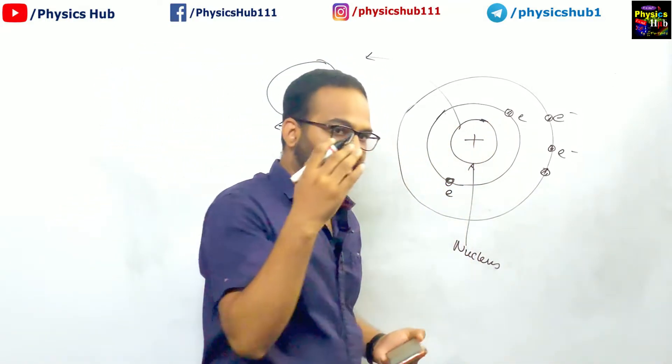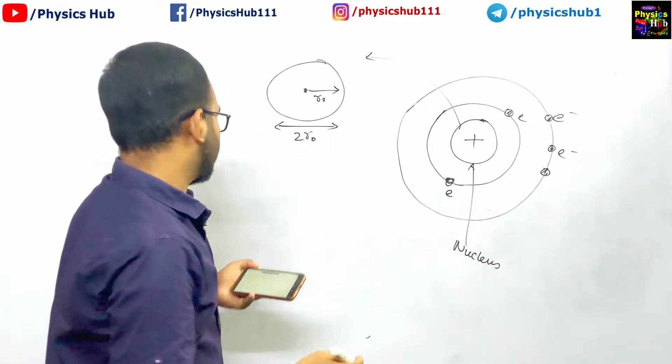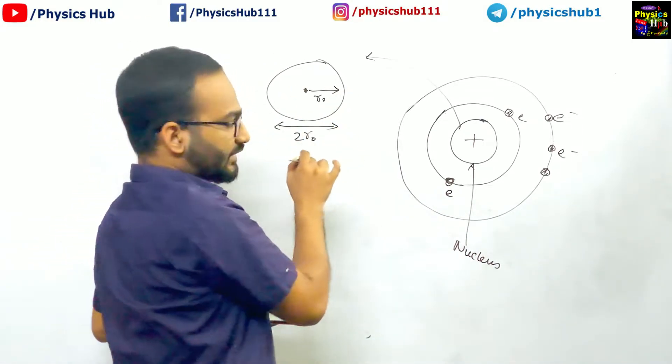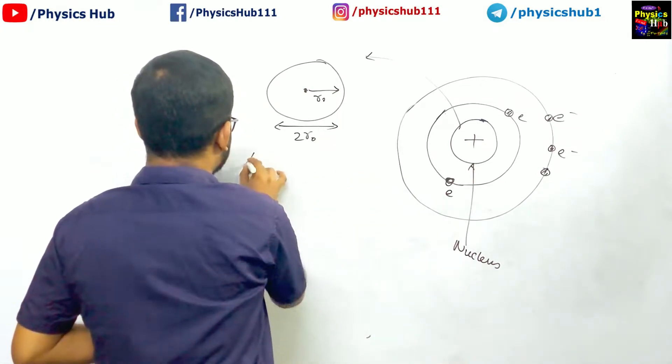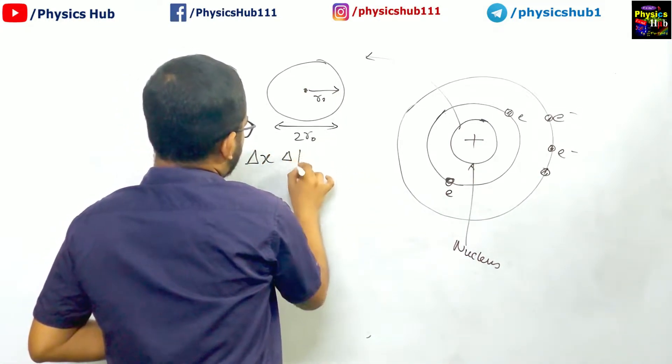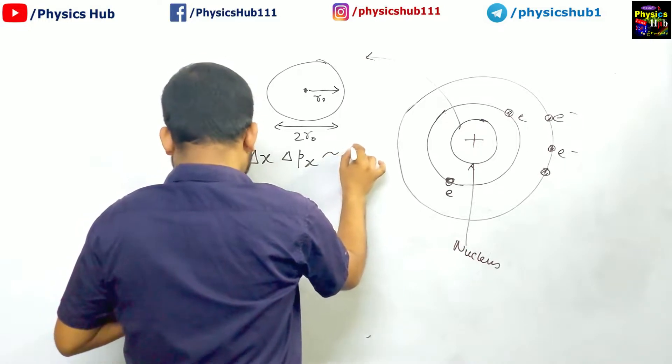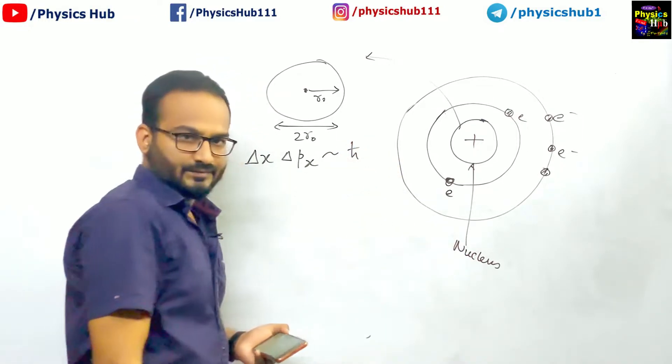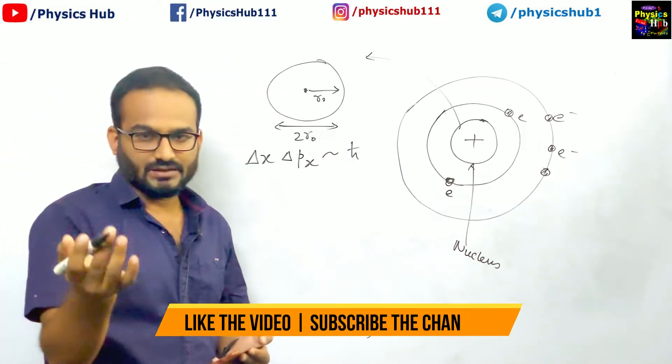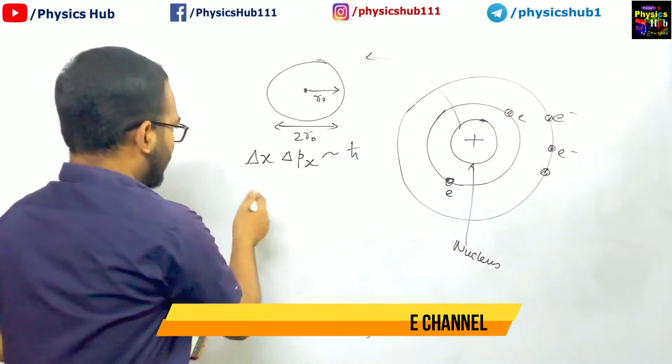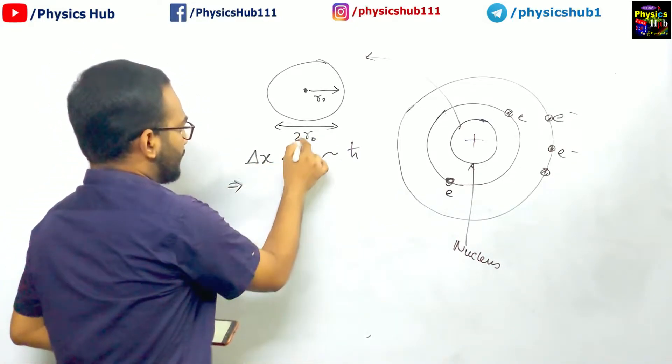This is the uncertainty in position. We know delta x times delta px is approximately h-cut, which is greater than or equal to h-cut by 2. So we are taking h-cut. In place of delta x, we want to put 2r0.